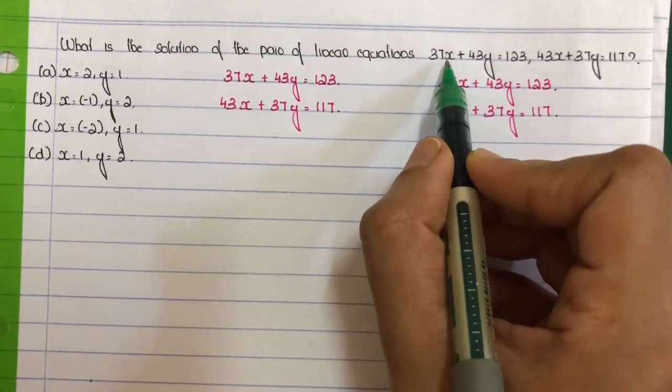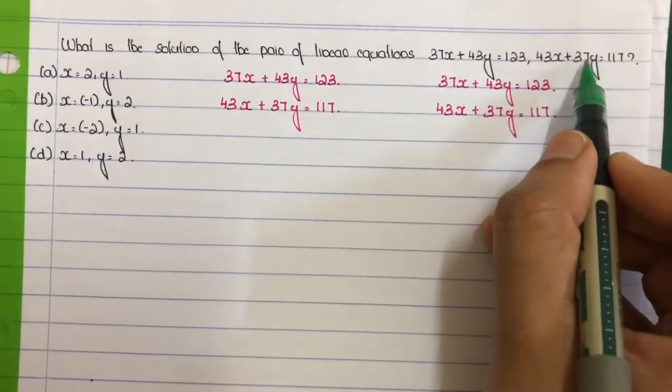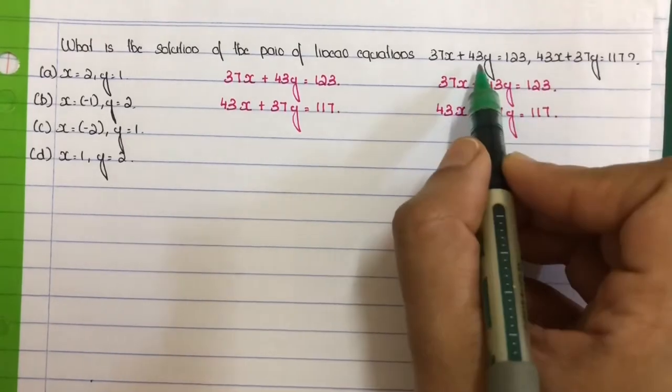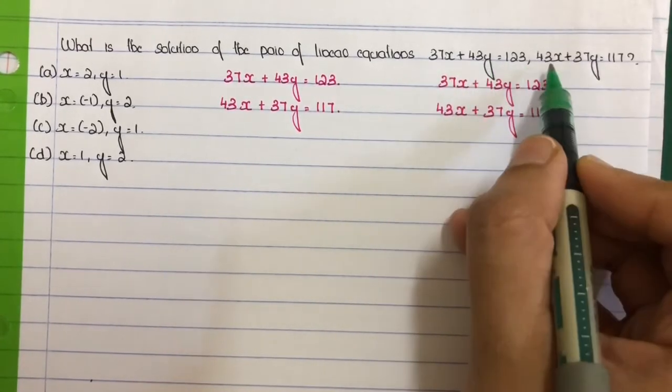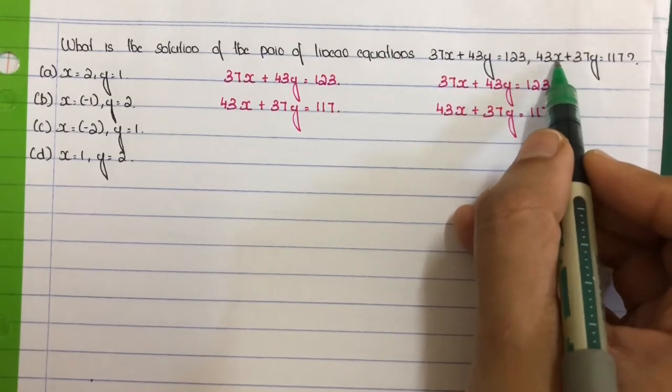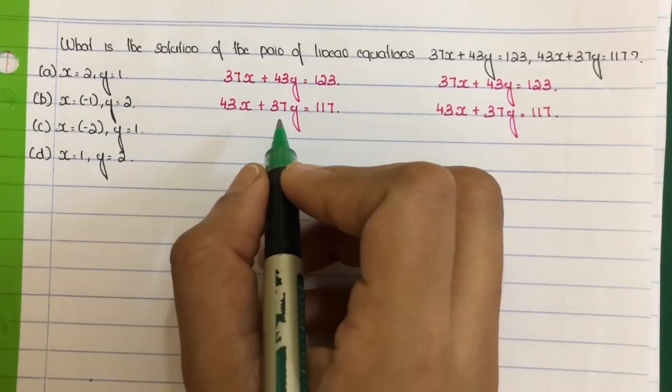First equation, the x coefficient is 37. Second equation, the y coefficient is 37. Next, first equation the y coefficient is 43, second equation the x coefficient is 43. This type of question we are going to solve. First step: